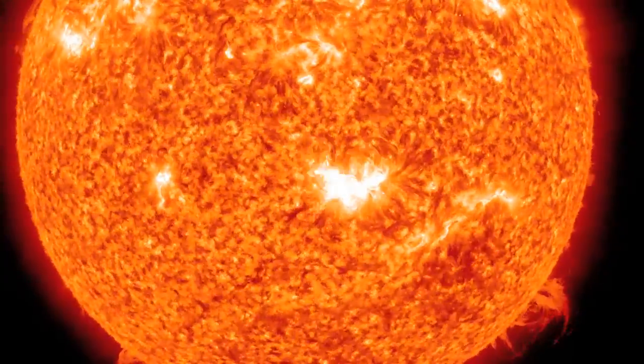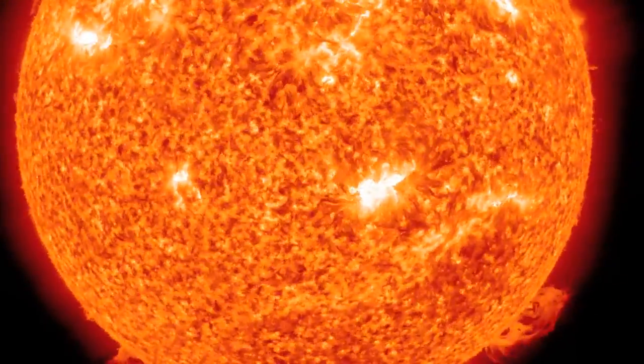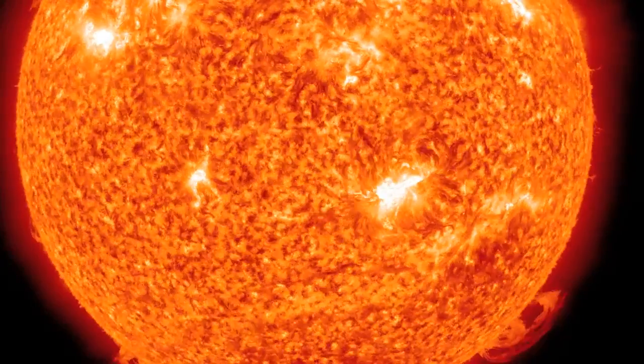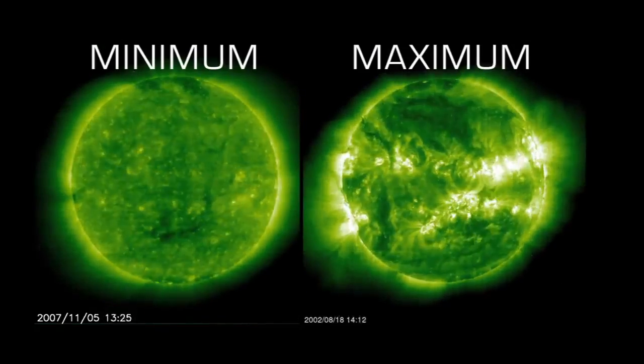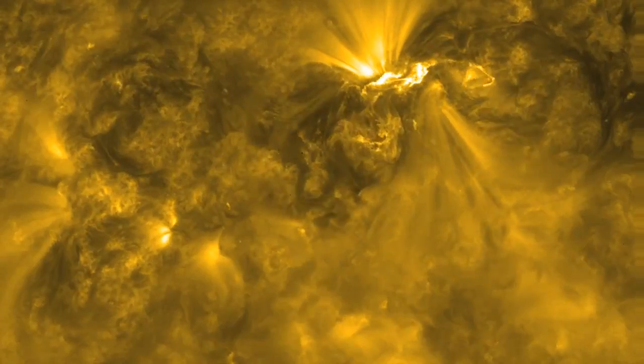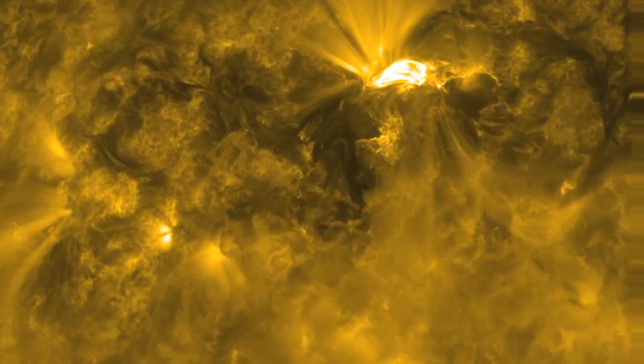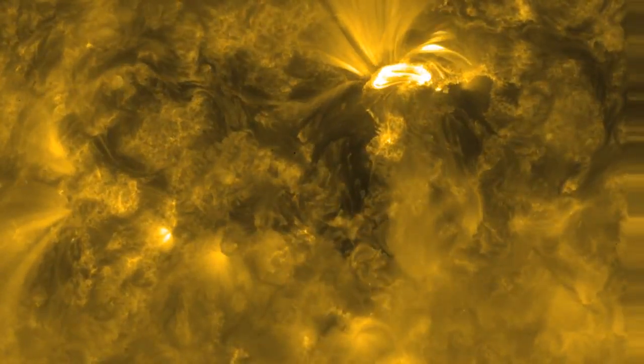Solar flares may seem like faraway events, but they can damage satellites and even ground-based technologies and power grids. Every 11 years, as the Sun reaches its maximum activity, they become bigger and more common, and that increases the chances that one will significantly affect Earth.